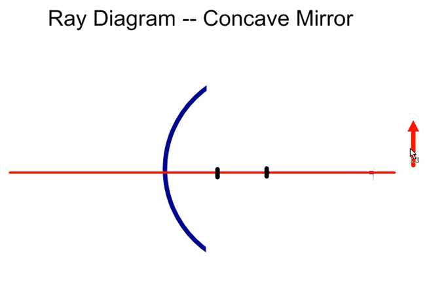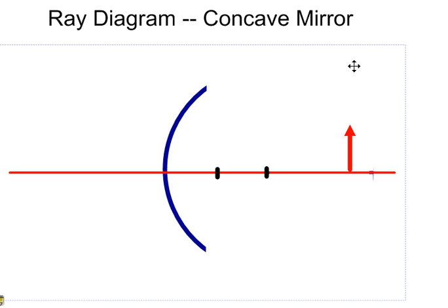This red arrow represents our object. Before we get started, we need to make sure of a couple things. We need to understand that these two lines represent the center of curvature and the focal length, or the focal point.